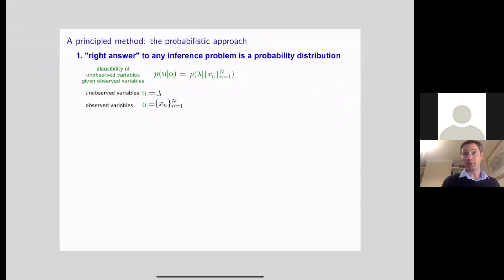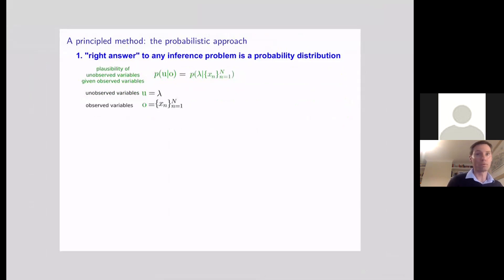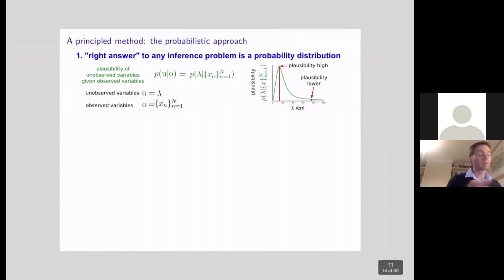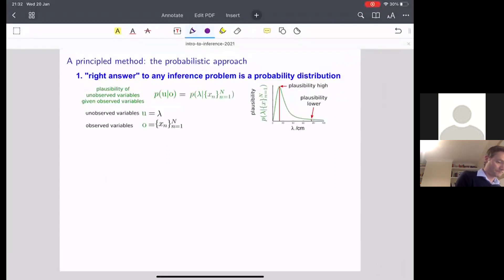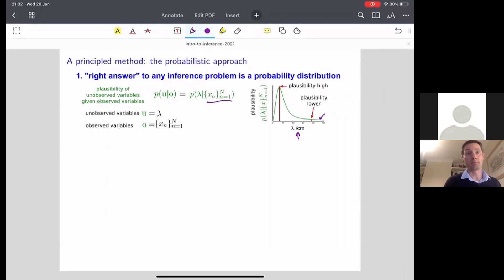In the case of the decay example: u is the unobserved radioactive decay parameter lambda, and o — the observed variables — are our dataset of decay events, the N decay events we've measured in our detector. What we're looking for from our inference problem is to return to the user the probability density of lambda given the set of decay events. A typical example might look like this: along the bottom we have lambda, and for any setting of lambda we can return the probability density indicating how likely that value of lambda was, given the observed values.